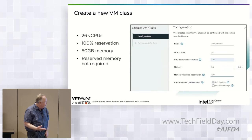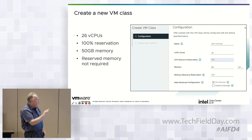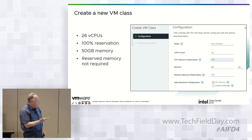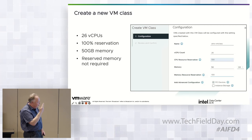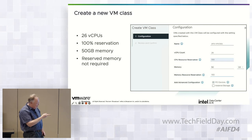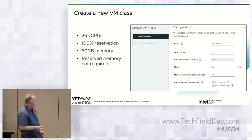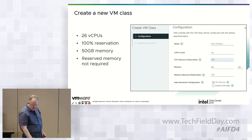We set up a VM class called 'amx-vm-class' with 26 vCPUs, with all CPU resources reserved. We gave it 50 gigs of memory — you can reserve memory if you want, but you don't have to; you can oversubscribe, so memory reservation is not required.